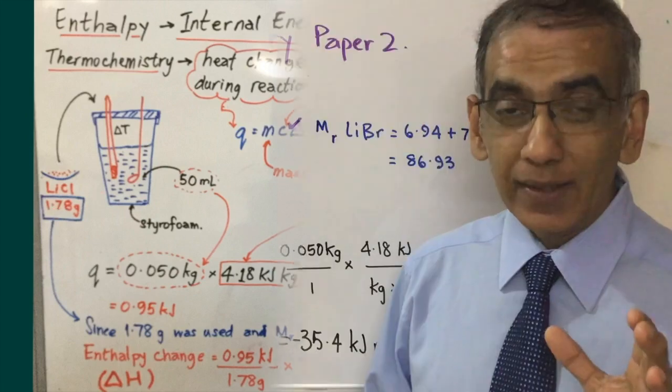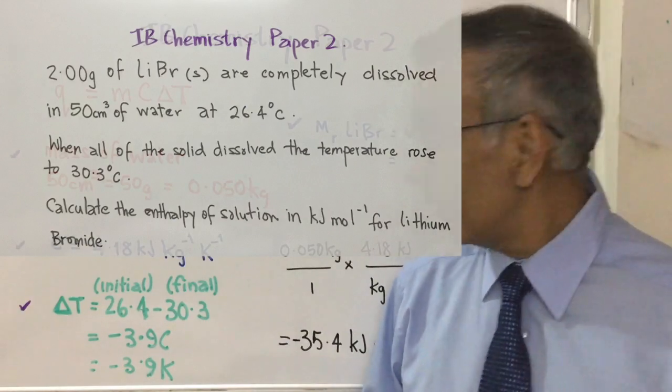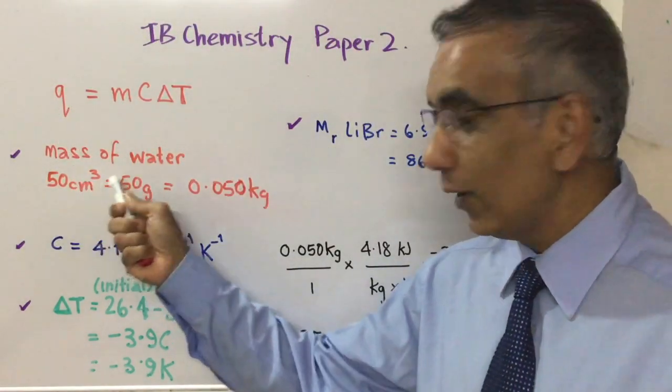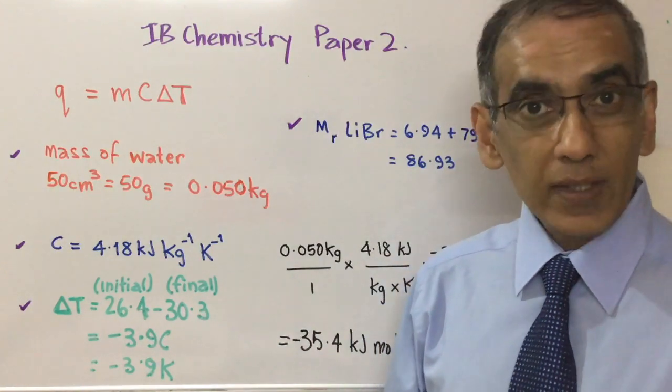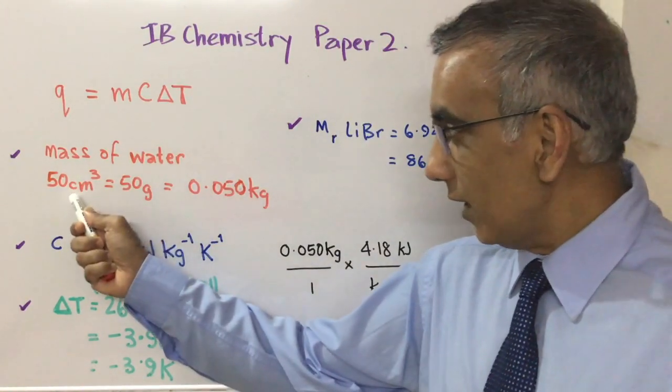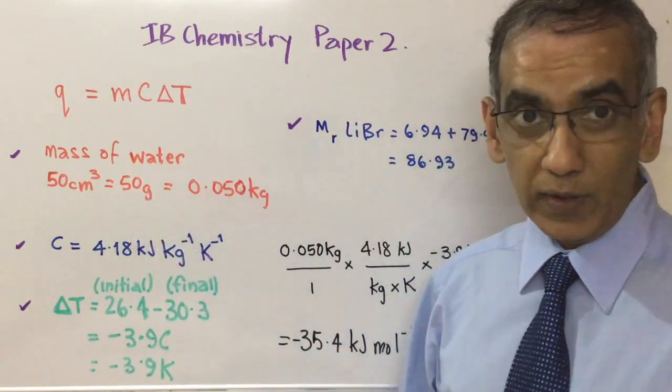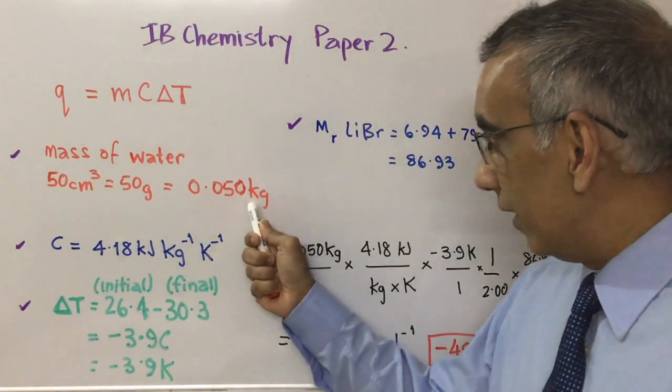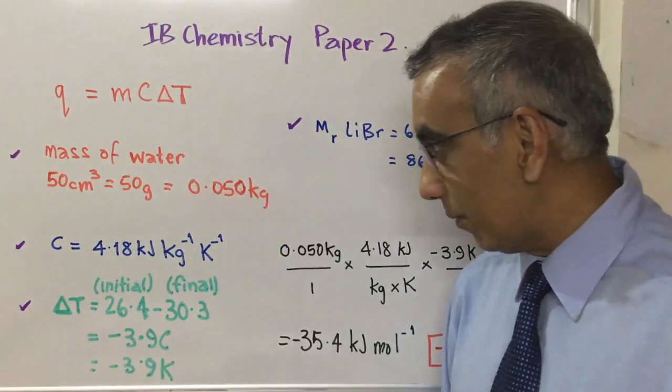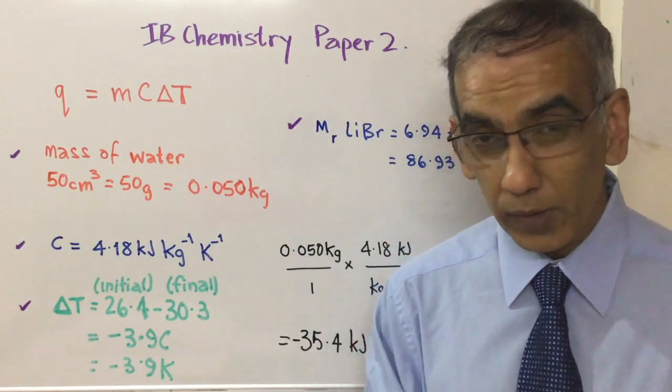Now let's have a look at how to solve that question that we started off with. You get the mass of water by looking at the volume given and being aware that the density of water is one. You're expected to know that 50 cm³ or 50 milliliters would be equal to 50 grams, and then you convert that of course into kilograms. Then the specific heat capacity of water is what you would need. C is 4.18 kilojoules per kilogram per Kelvin.